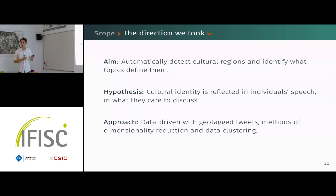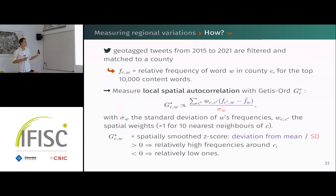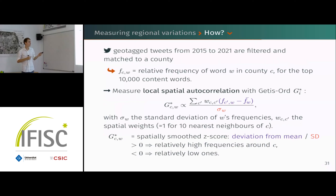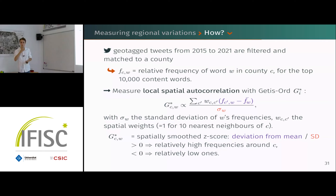Starting again from geotagged tweets, we match them to one of the ~3,000 counties of the US. In each county we look at the top 10,000 content words w and compute the relative frequency f_{c,w} of each word w in each county c. This data is quite noisy, so we first measure local spatial autocorrelation using a metric called Getis-Ord Gi*, leading to another metric g_{c,w}.